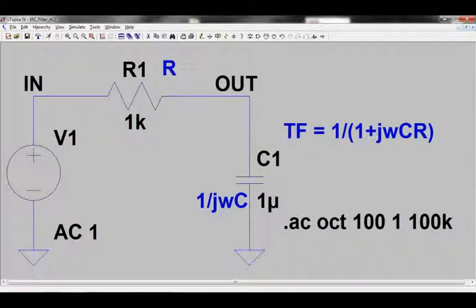With a resistor impedance of R and a capacitor impedance of 1 over j omega C, we can go through some simple maths to get the transfer function to be 1 divided by 1 plus j omega C R.